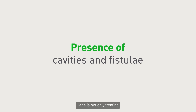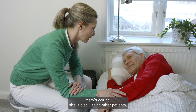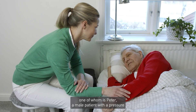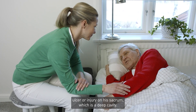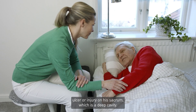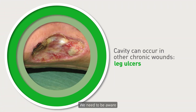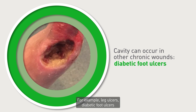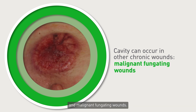Jane is not only treating Mary's wound, she is also visiting other patients, one of whom is Peter, a male patient with a pressure ulcer or injury on his sacrum, which is a deep cavity. We need to be aware that a cavity can occur in other chronic wounds as well, for example leg ulcers, diabetic foot ulcers, and malignant fungating wounds.